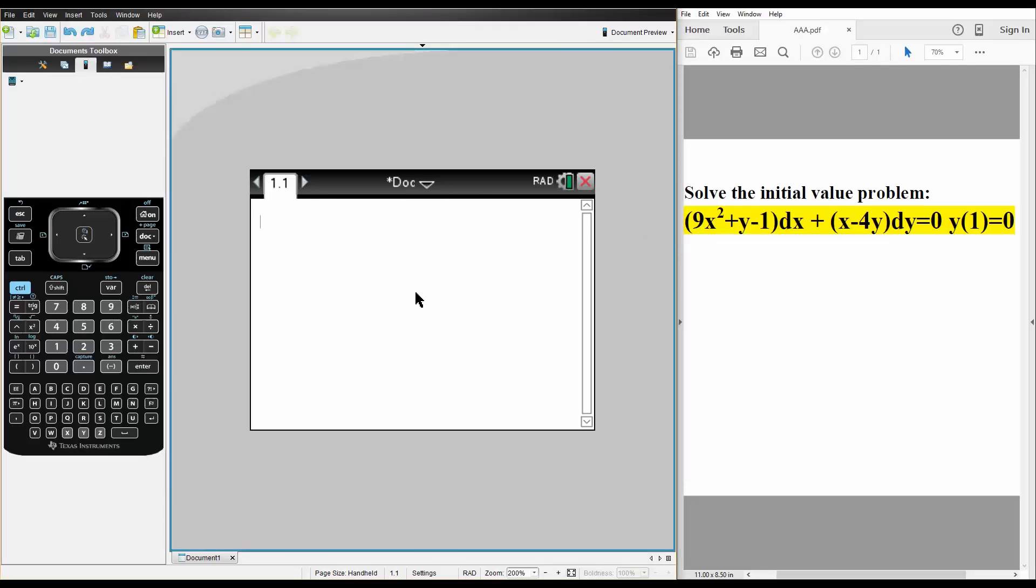And so, this is what we need to do. We say that P is defined as this term right here. P would be defined as the term connected with dx. So, that would be 9x² + y - 1.